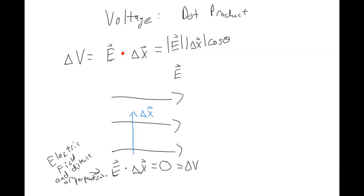Another way to write the dot product is: magnitude of the electric field times magnitude of the displacement times cosine of the angle between them. For the perpendicular example, the angle is 90 degrees, so you get cosine of 90, which equals zero. You can plug that into your calculator and confirm that cosine of 90 degrees is zero.